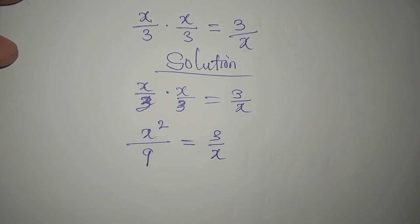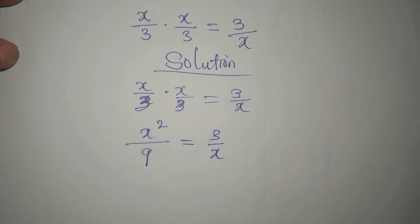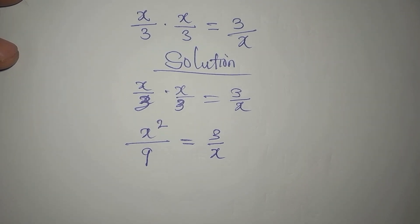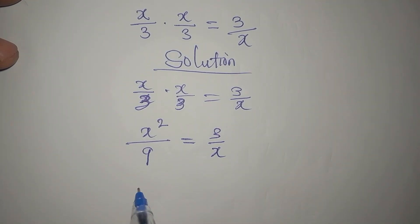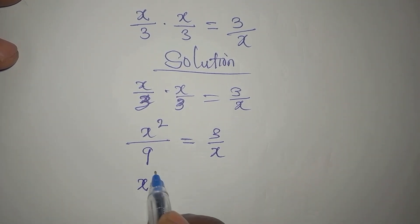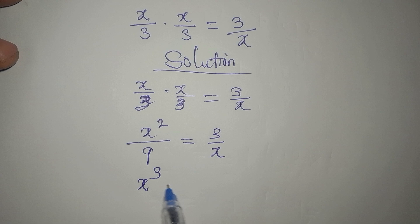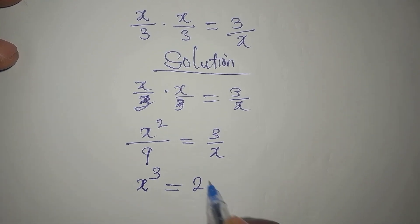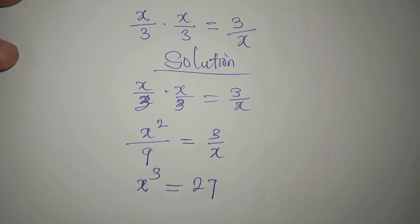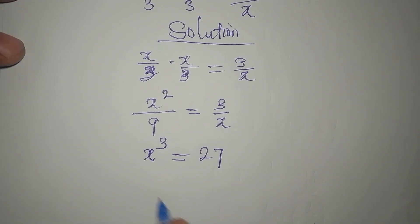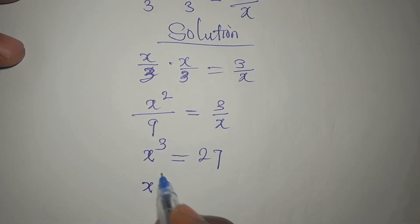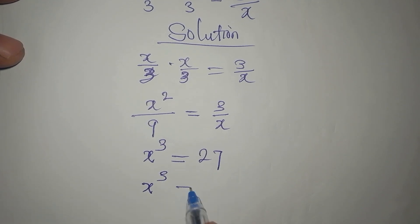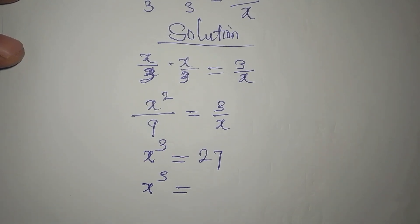And at this point we cross multiply. x squared times x will give us x cubed, then 9 times 3 is 27, so we have x to the power of 3 equals 27.